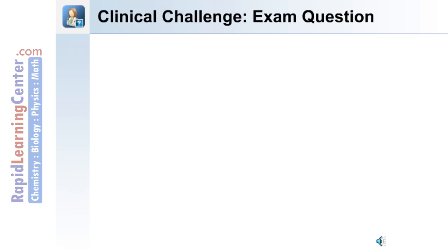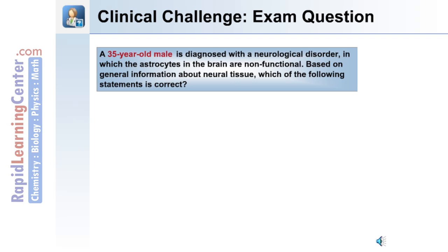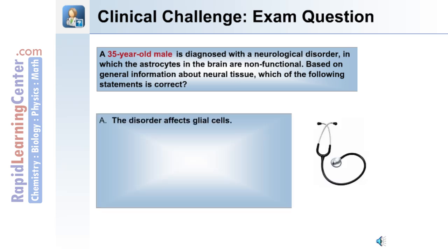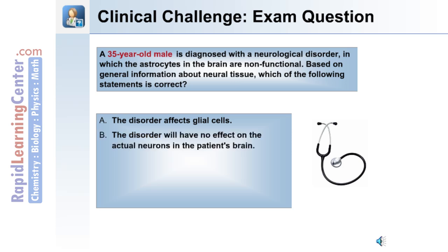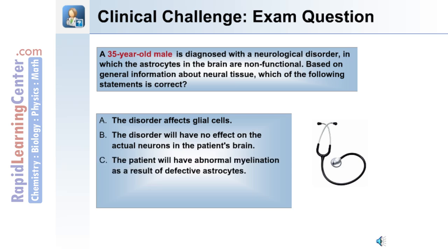Here's a clinical challenge exam question. A 35-year-old male is diagnosed with a neurological disorder in which the astrocytes in the brain are non-functional. Based on general information about neural tissue, which of the following statements is correct? A: The disorder affects glial cells. B: The disorder will have no effect on the actual neurons in the patient's brain. C: The patient will have abnormal myelination as a result of defective astrocytes. D: A, B, and C are correct. Or E: Only answer C is correct.